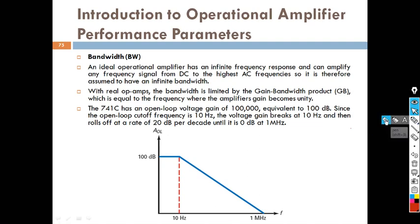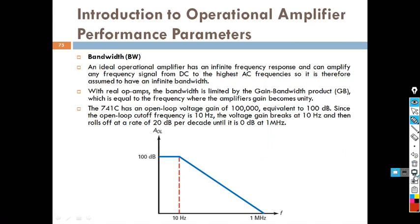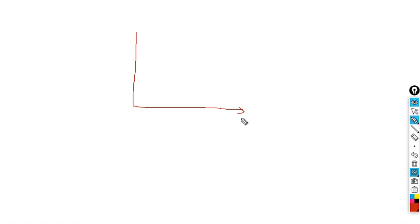Here I will draw the x-axis as frequency and y-axis as gain. The gain AD is normally expressed in terms of dB, where dB means 20 log AD.